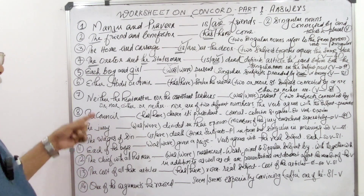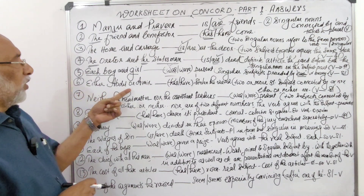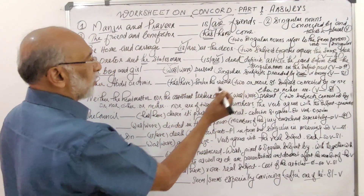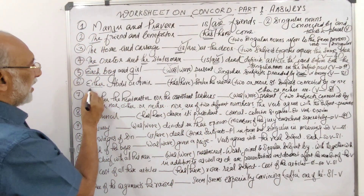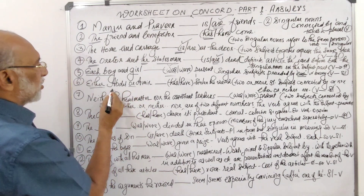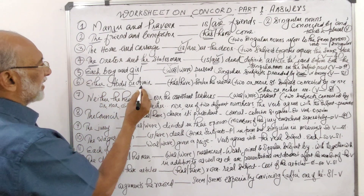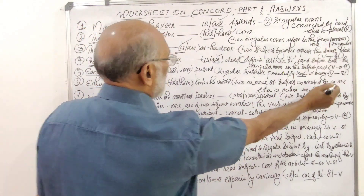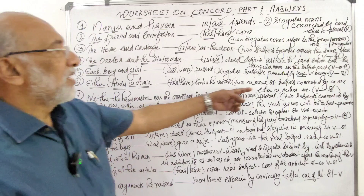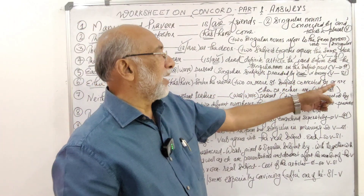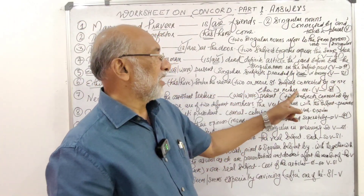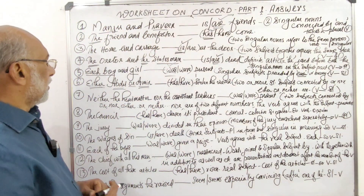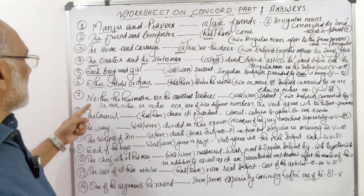Question 6: 'Either Abdul or Amir has/have stolen the watch.' The answer is 'has stolen.' When two singular nouns are connected by 'either...or,' they take a singular verb. Two or more singular subjects connected by 'or,' 'nor,' 'either...or,' or 'neither...or' — the verb should be singular.